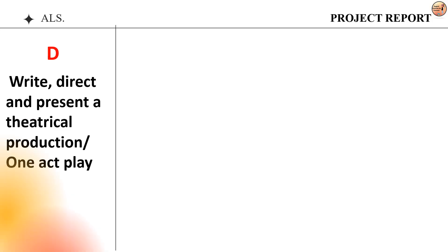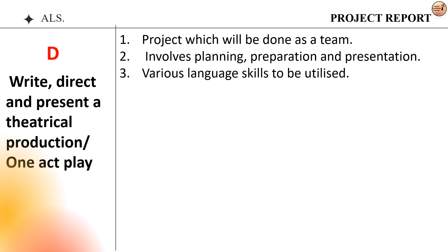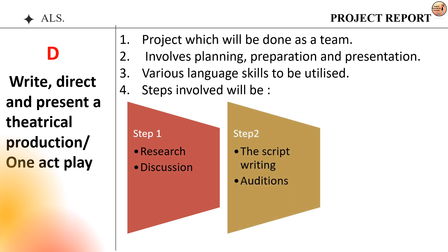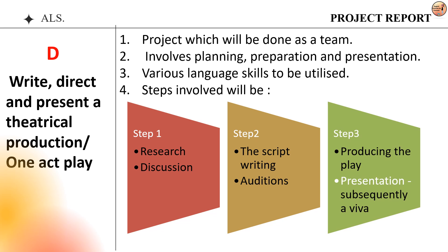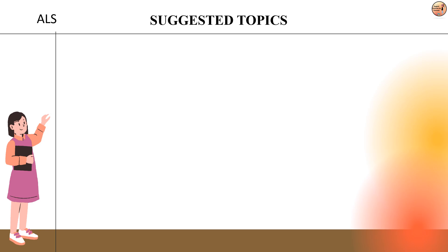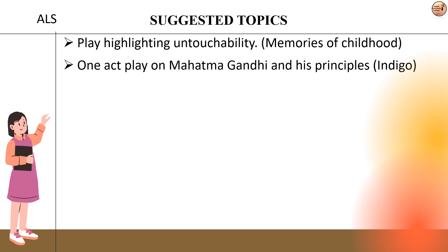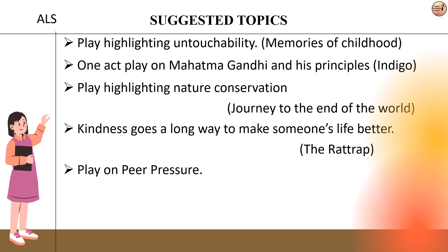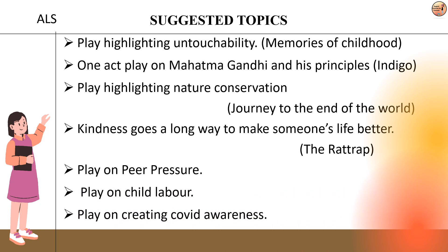The last option is to write, direct and present a theatrical production or perform a one-act play. This will be done as a group project involving planning, preparation and presentation. Various language skills like reading, writing, listening and speaking will be utilized. The steps involved are: research, discussion, script writing, auditions, and production of the play. The time duration for the play is 5 to 6 minutes. The project will end with a presentation and subsequently a viva. You can use props relevant to the theme of your play. Topics for theatrical projects include: a play highlighting untouchability; a one-act play on Mahatma Gandhi and his principles; a play highlighting nature conservation; kindness goes a long way to make life better; a play on peer pressure; a play on child labour; and a play on creating COVID awareness.